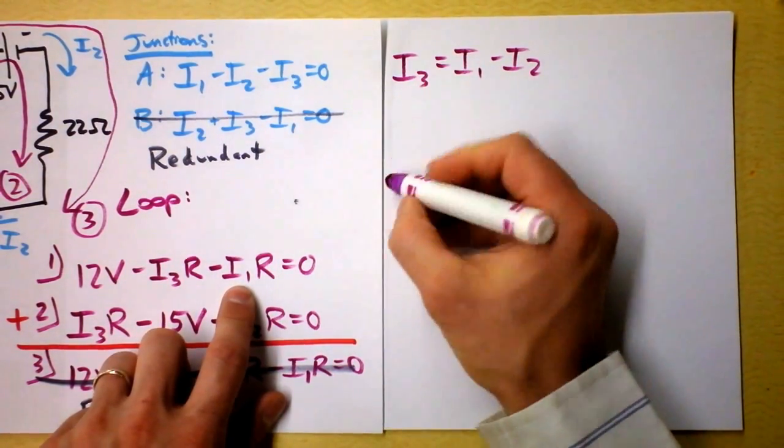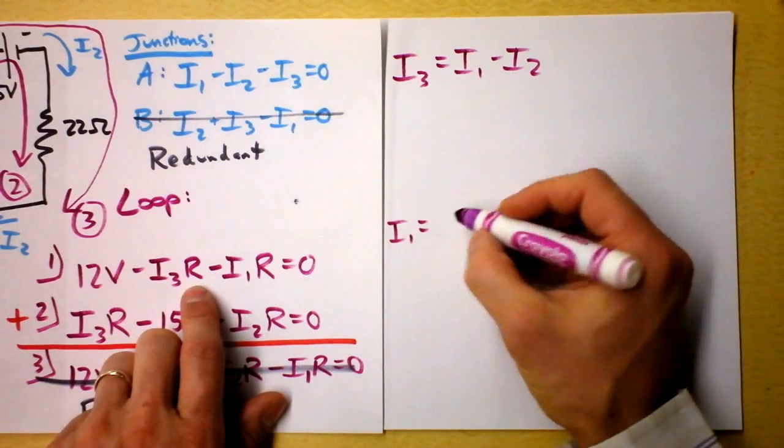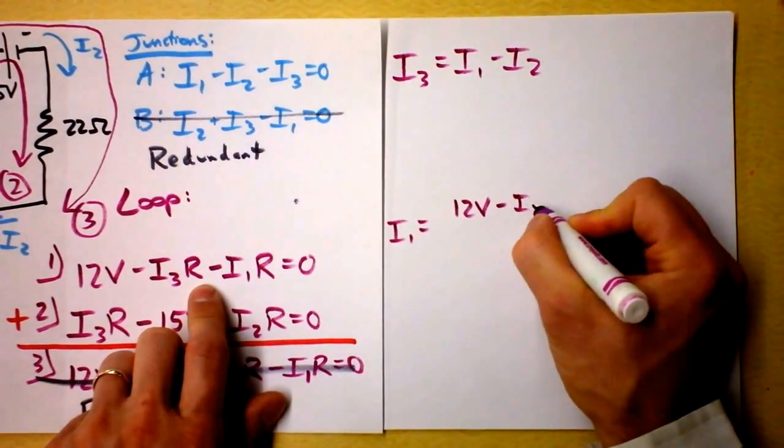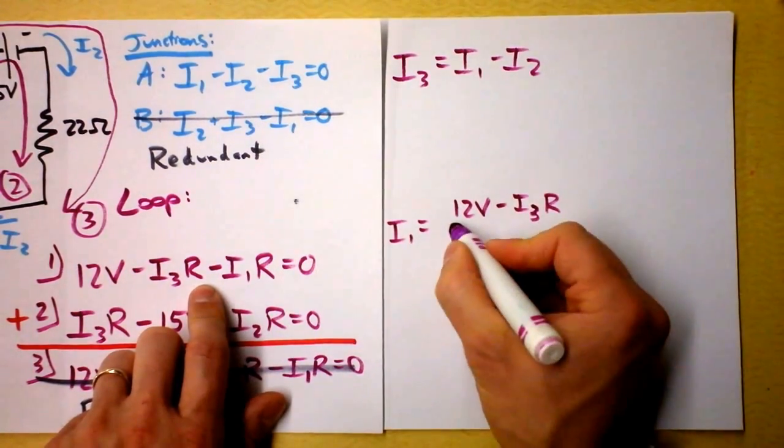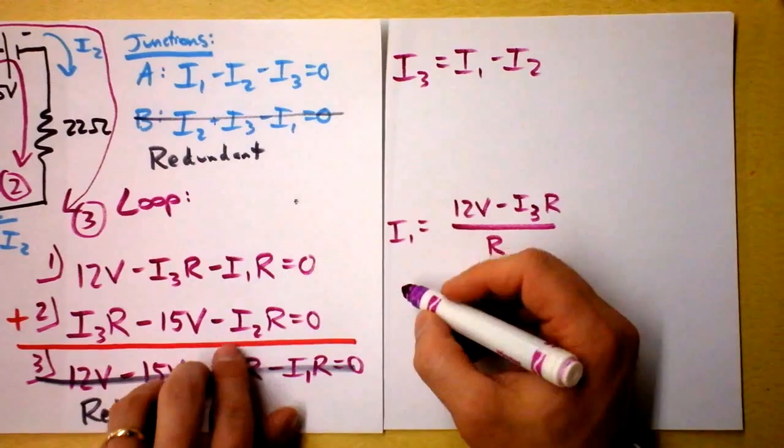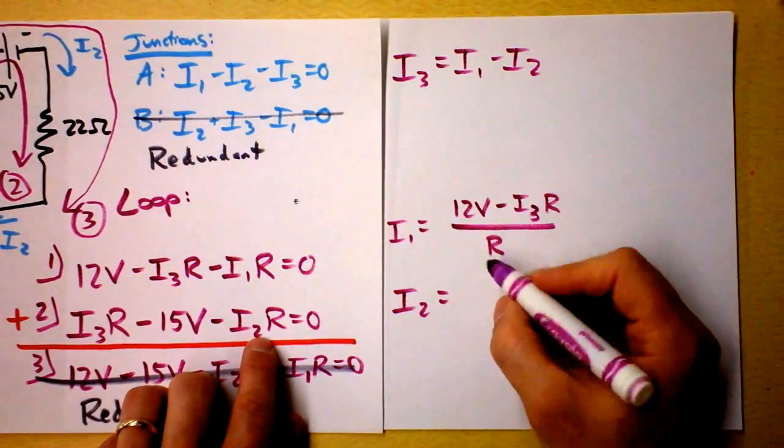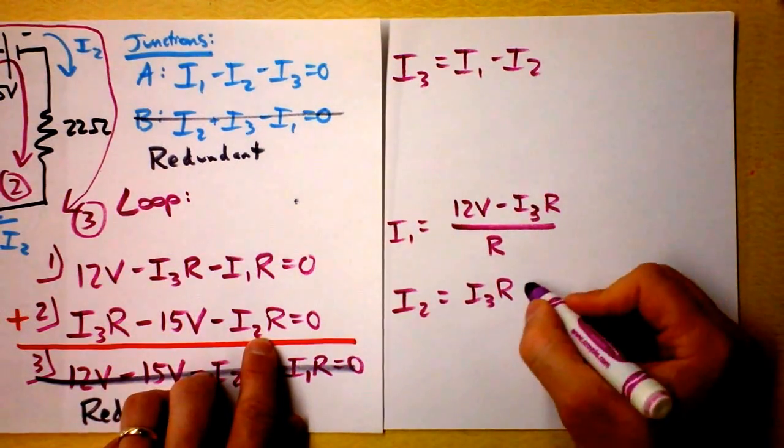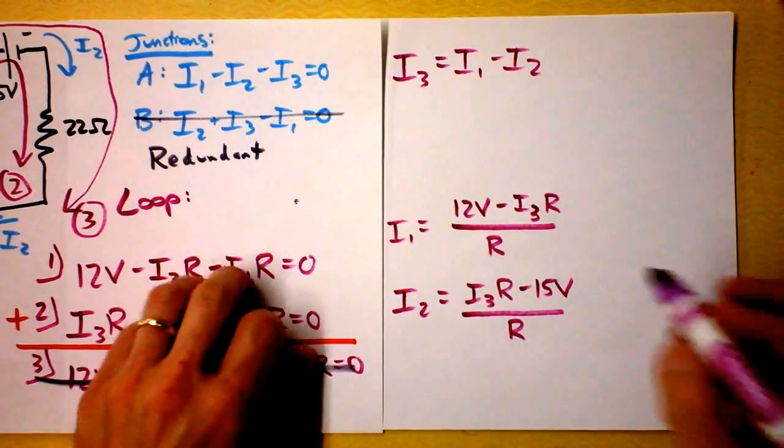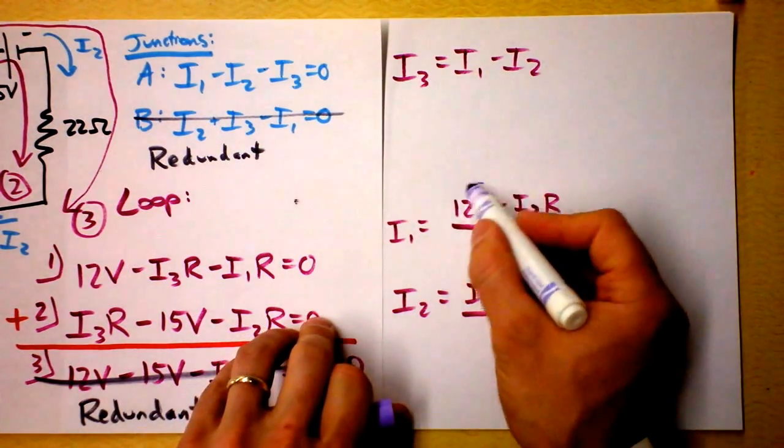So that says that I1 equals, well, it's going to be 12 volts minus I3 times R divided by R. Right? Okay? And then if I solve this guy for I2, I2 will be I3 times R minus 15 volts, the whole thing, divided by R. Naturally, we did this so that we could plug into the above equation.